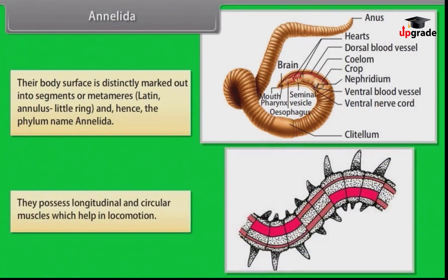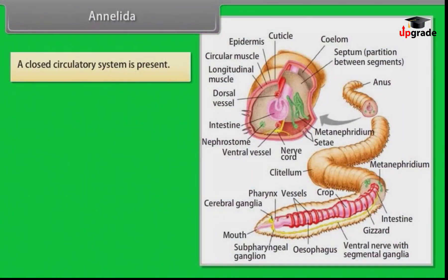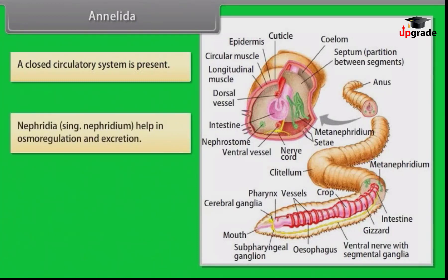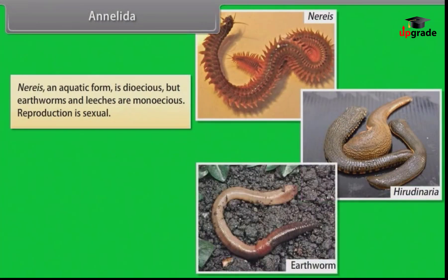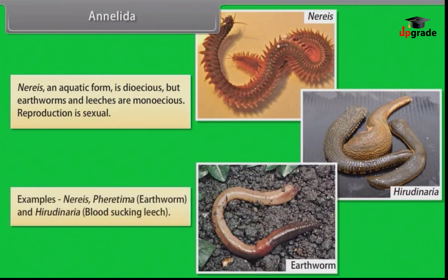Annelids possess longitudinal and circular muscles which help in locomotion. A closed circulatory system is present. Nephridia help in osmoregulation and excretion. The neural system consists of paired ganglia (singular: ganglion) connected by bilateral nerves to a double ventral nerve cord. Aquatic forms are dioecious, but earthworms and leeches are monoecious. Reproduction is sexual. Examples: Pheretima (earthworm) and Hirudinaria (blood-sucking leech).